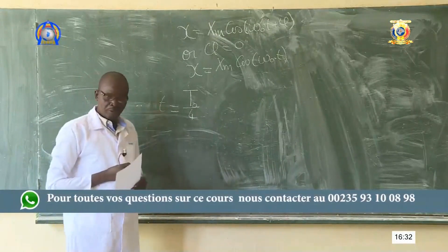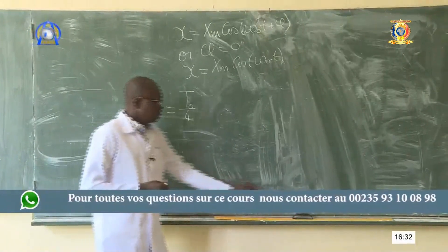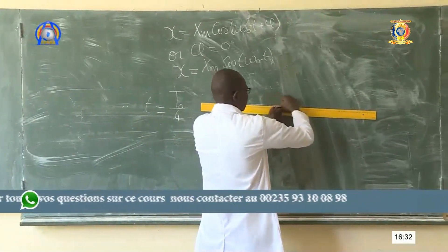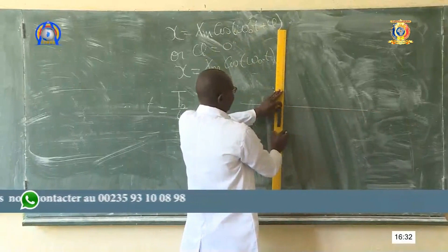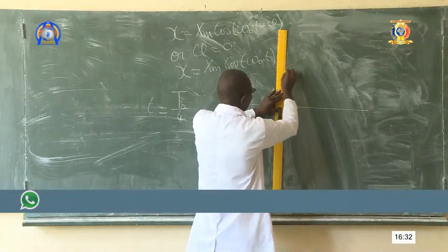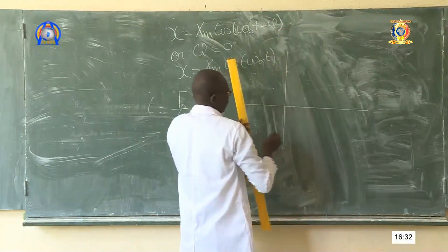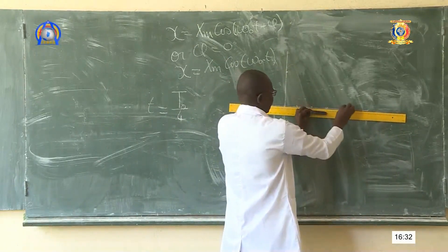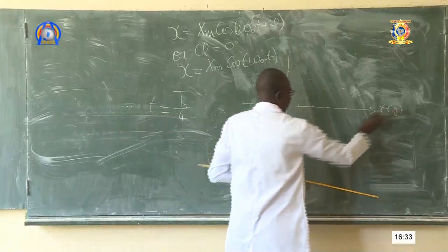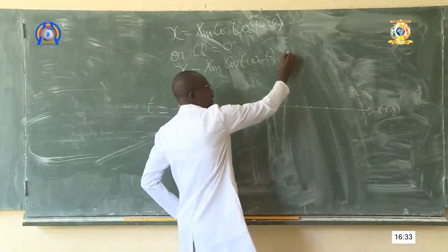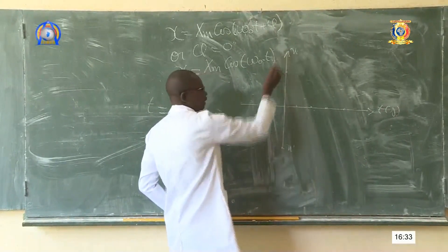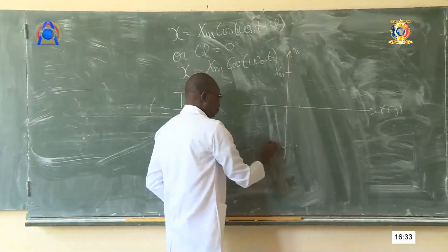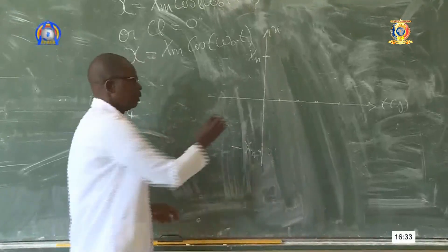Maintenant, je trace le repère. Vous tracez le repère. Vous avez ici l'axe du temps, l'axe des abscisses. Vous avez x'x, vous avez ici l'amplitude xm, et en bas -xm. L'origine c'est zéro.